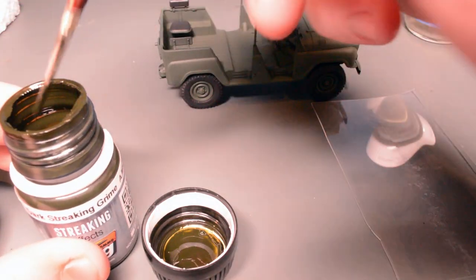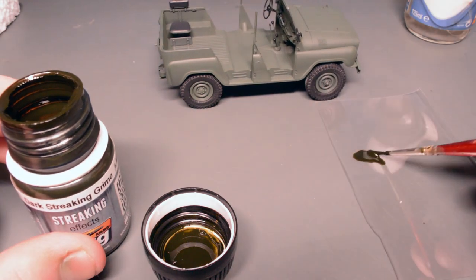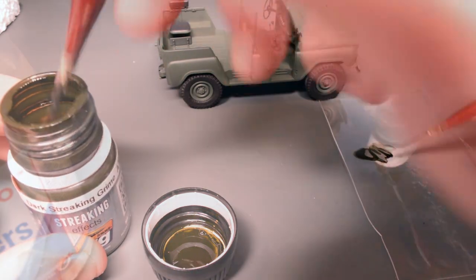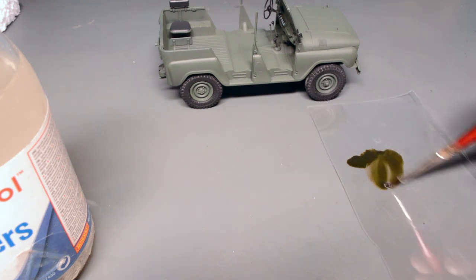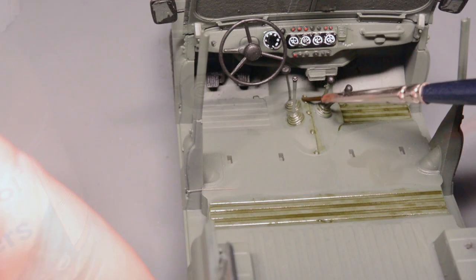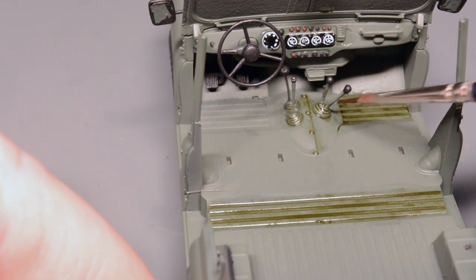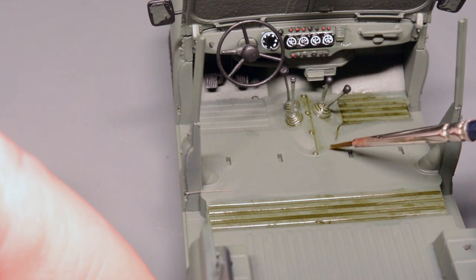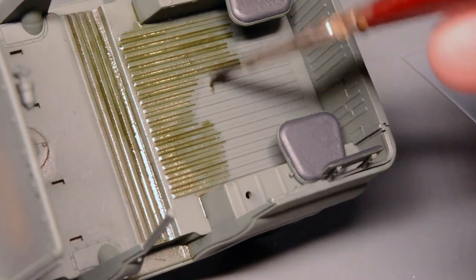With the decals in place and everything painted I wanted to do some rudimentary weathering on the interior just so it looked a little bit used in the areas which you could see through the windows once the vehicle was closed up. I used some dark streaking grime from Mig Ammo and I diluted it with Humbrol enamel thinners and I just flowed this straight over the top of the raw paint. I didn't use any gloss coat or anything and you can see that it's actually soaking into the paint a little bit rather than just flowing along the recesses like it would if I had applied a gloss coat.